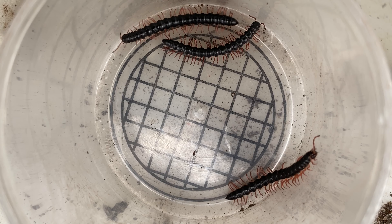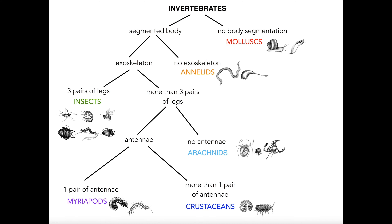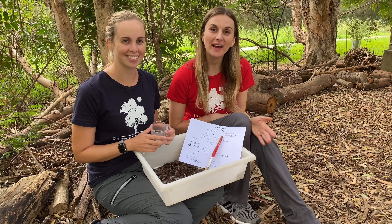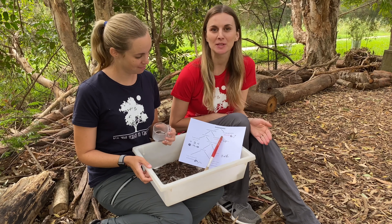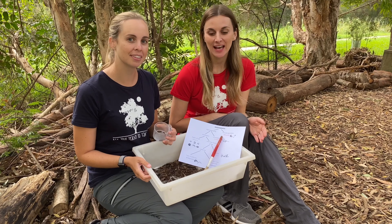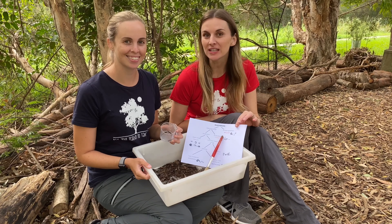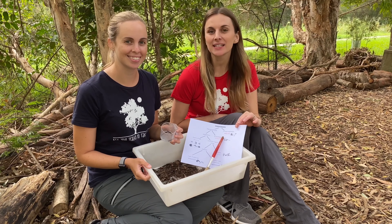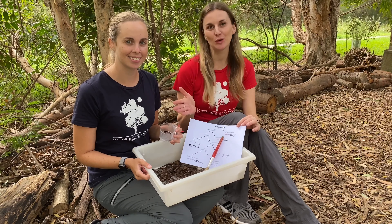I can see some antennae and it looks like there is just one pair, so that means they're a myriapod. We've had a great time classifying the invertebrates we've found. Now it's your turn to use our branching key to classify the invertebrates in your place.